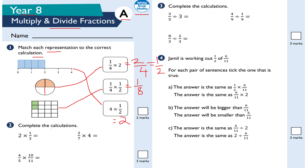Question number 2: complete the calculations. 2 times 1 third — 2 multiplied by 1 third gives the answer of 2 thirds. I multiply the whole number by the numerator and keep the denominator fixed. Next, 2 sevenths times 4: I do 2 times 4, which is 8, and keep my denominator fixed as 7. So the answer is 8 sevenths, which I can write as a mixed number: 1 and 1 seventh.